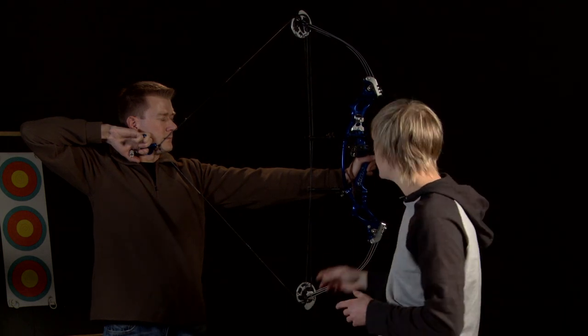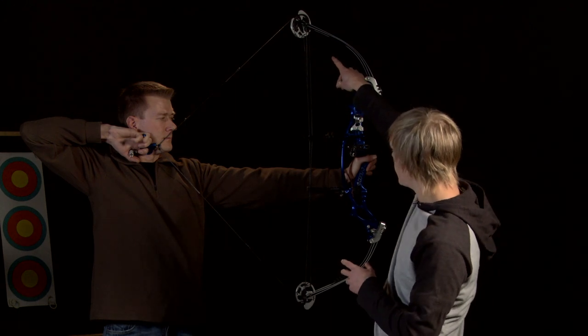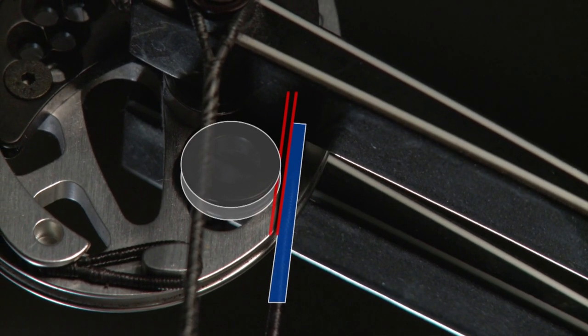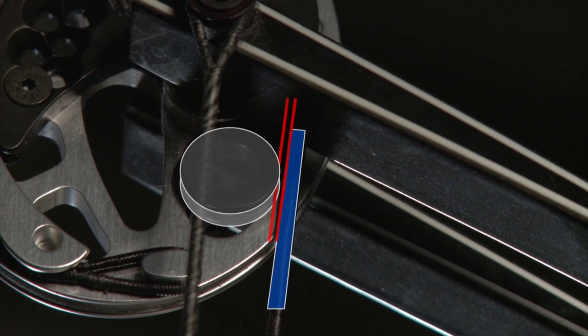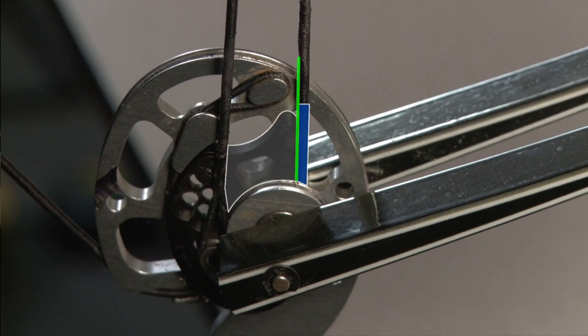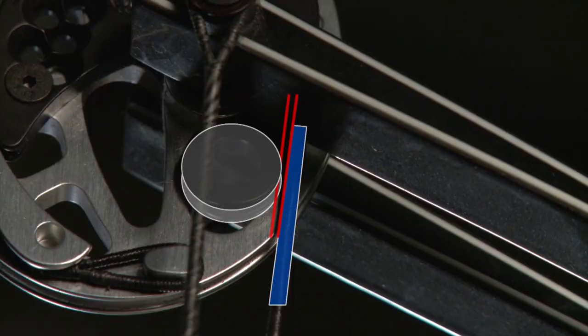Now, what we're looking for when a bow is timed correctly is for both modules to hit the cable at the same time. Now, as you can see here on Neil's bow, the top cam is actually hitting slightly after the bottom cam is hit. So, where we're on there, we're still slightly off at the top.